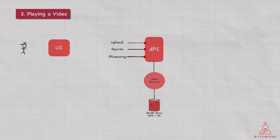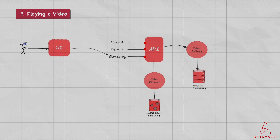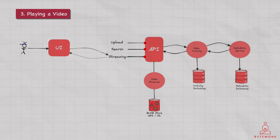Our third use case is playing a video. The user selects a video to play from the video catalog displayed on the UI. The UI sends a request to the Video Service API with the ID of the video to be displayed. The Video Service API retrieves the video metadata from the Video Catalog microservice, including the location of the video on the storage service and its different encodings. The Video Service API generates a pre-signed URL for the appropriate video encoding from the storage service such as Google File Systems or S3, and returns it to the UI. The UI uses the pre-signed URL to request the video stream from the Video Streamer microservice, which retrieves the appropriate video from the storage service and serves it to the user over HTTP. Finally, the user watches the video on the UI.